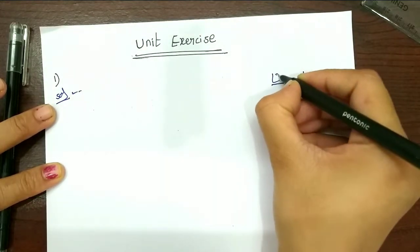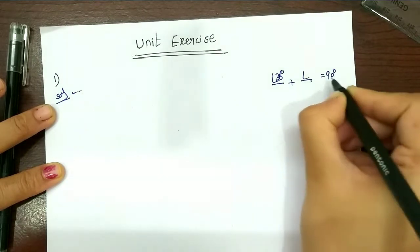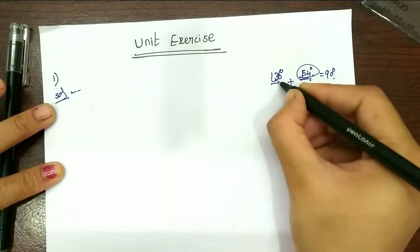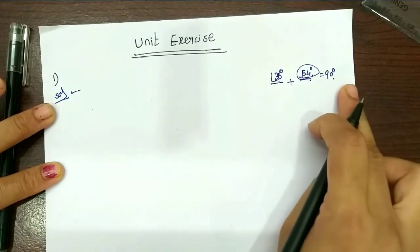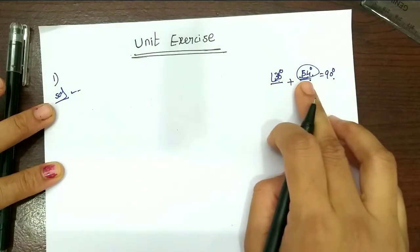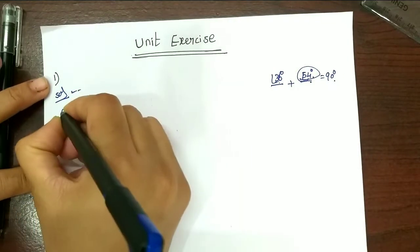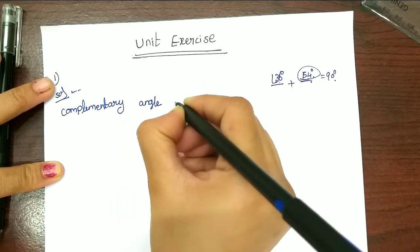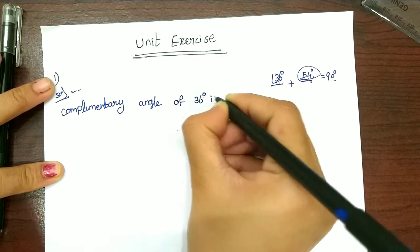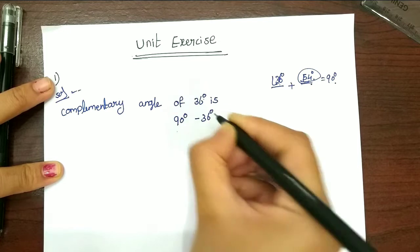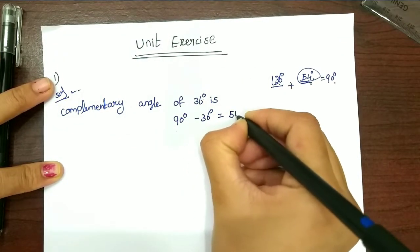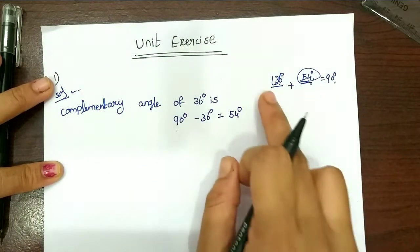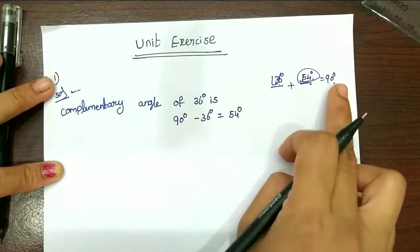This angle is 36. So what do you add to 36 to make 90? It will be 54. So 54 is the answer. The complementary angle of 36 degrees is 90 degrees minus 36 degrees, which equals 54 degrees.